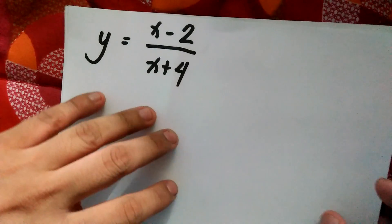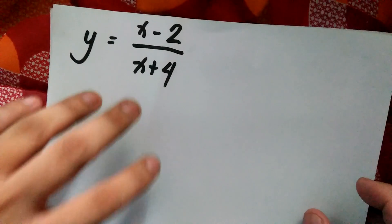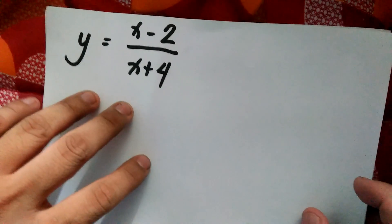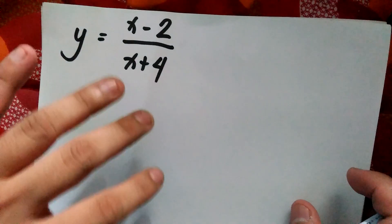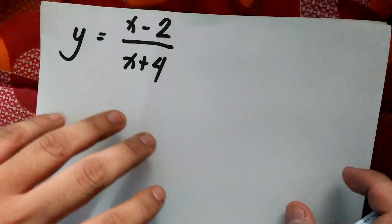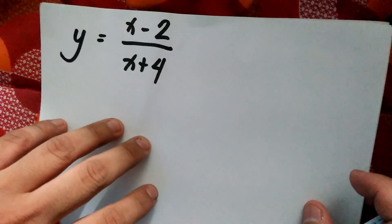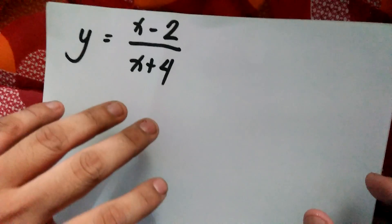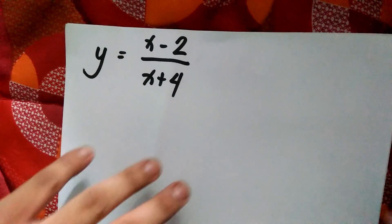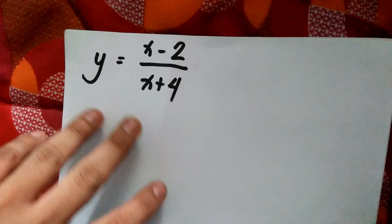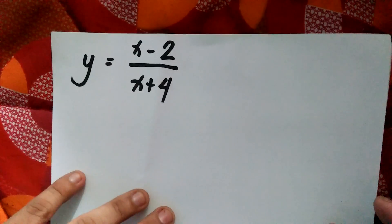Our first discussion will be how to find the inverse of a specific function that are usually asked on MTAP oral computation questions, which are good for a minute or 30 seconds. For our first problem, we have a rational function in the form y is equal to x minus 2 over x plus 4.